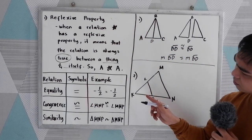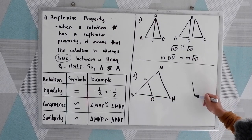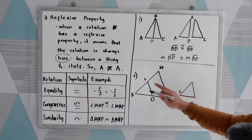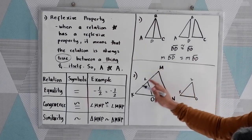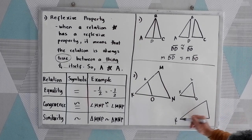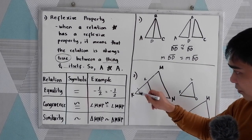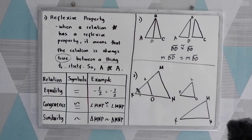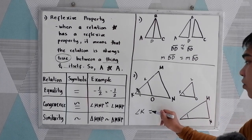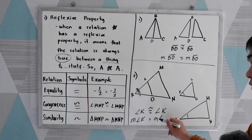What if we have this figure? If we redraw it, we get a smaller triangle KLO and a bigger triangle KMN. We have the shared angle K. By reflexive property, angle K is congruent to angle K, or the measure of angle K is equal to the measure of angle K. That is the reflexive property of congruence and equality.